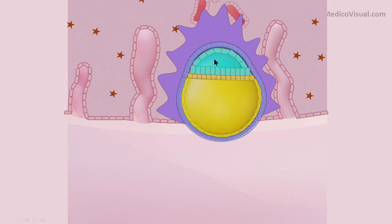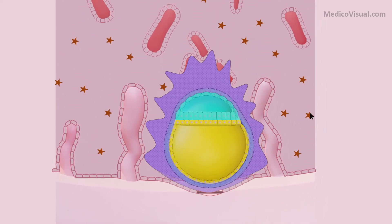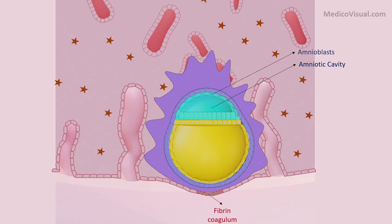Then the central cells start undergoing degeneration, a cavity forms, and the cells lining this convert into plexus cells. The second cavity that is formed is called the amniotic cavity, the cells lining this cavity are called amnioblasts, and this membrane is called the amnion. The initial defect that was formed is closed by fibrin deposition and is called the fibrin coagulum.